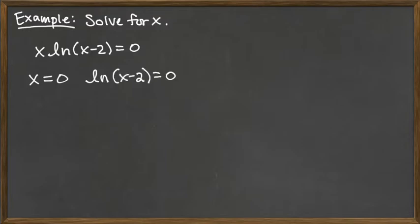The way I usually think about solving natural log equations is changing it into an exponential. So what I'm really asking myself is e to the 0 is equal to x minus 2.